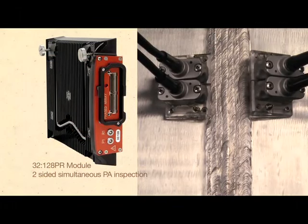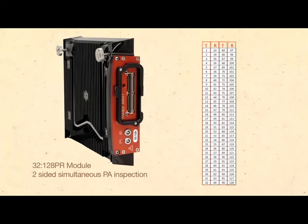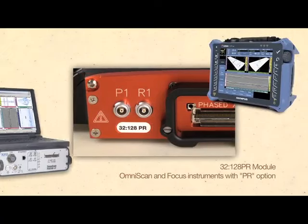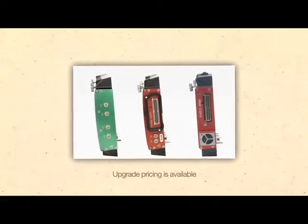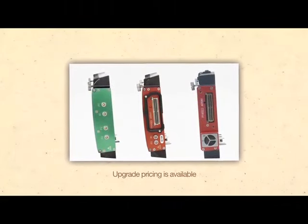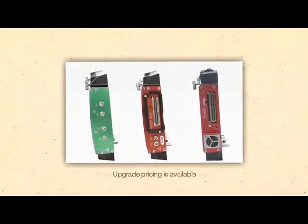Instrumentation to drive DMA probes requires the ability to transmit and receive using different elements or apertures available in the OmniScan and Focus instruments with the pulsar receiver or PR option. Upgrade pricing is available for standard or previous generation OmniScan modules.